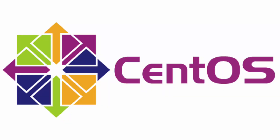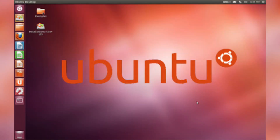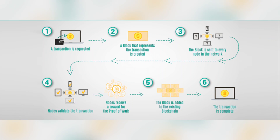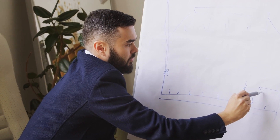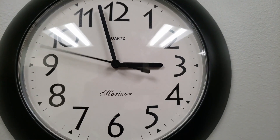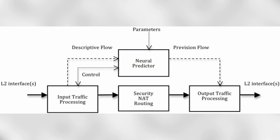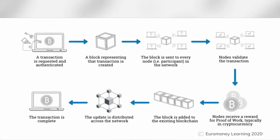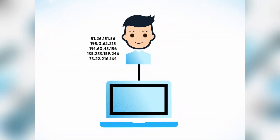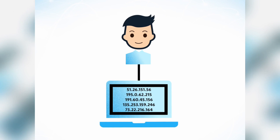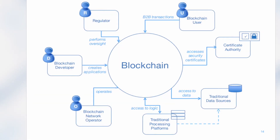Moreover, you need to decide whether the nodes will be hosted on the cloud, on premises, or both. You also need to select and buy necessary hardware like processors. Lastly, choose a base operating system such as Fedora, CentOS, Debian, Red Hat, Windows, or Ubuntu. Step 5: The next step is to establish the internal architecture of your blockchain. You should be careful during this step since some of the parameters can never be changed once your blockchain platform is running.